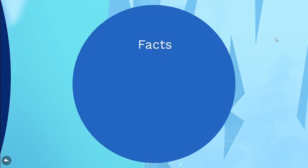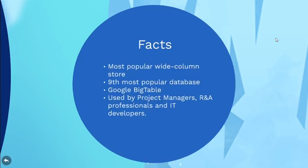Let's have a look at some of the facts. Cassandra is the most popular wide-column store and in September 2014 became the ninth most popular database. Its data model is based on Google Bigtable and its users include project managers, research and analytics professionals and IT developers.